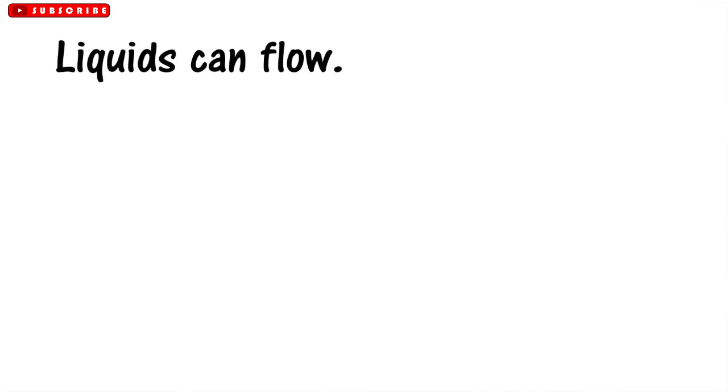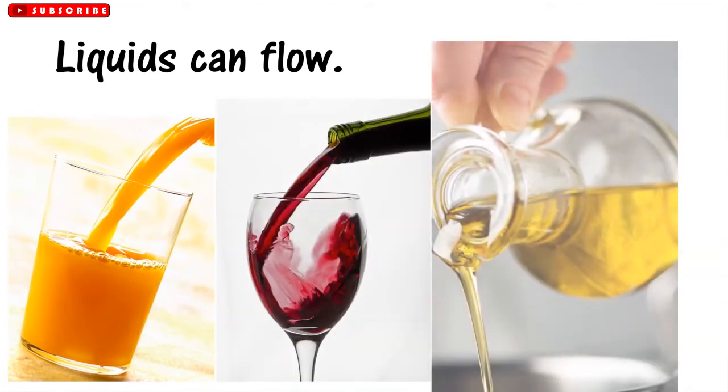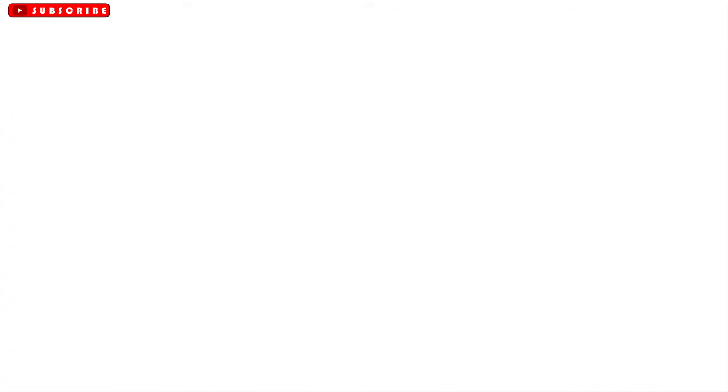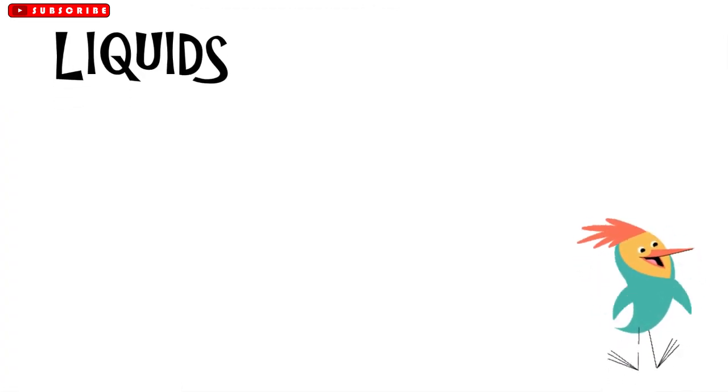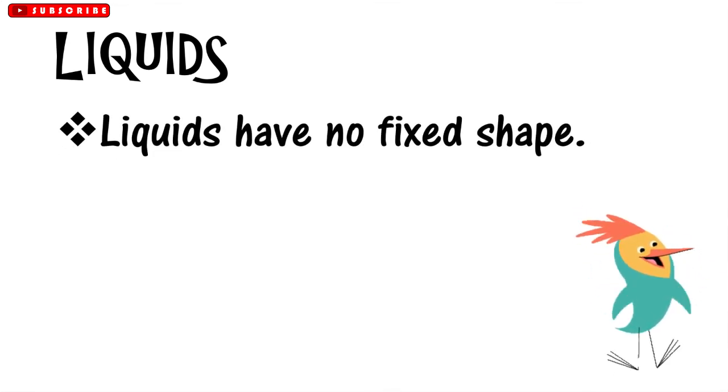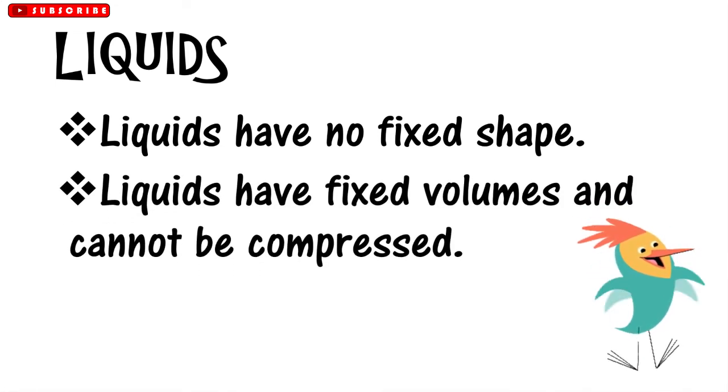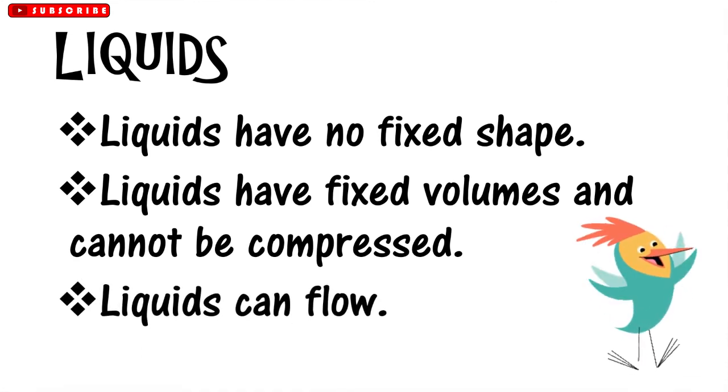Liquids can flow. They can flow from a higher place to a lower place. Hence, all liquids have these three characteristics. First, liquids have no fixed shape. Second, liquids have fixed volumes and cannot be compressed. And third, liquids can flow.